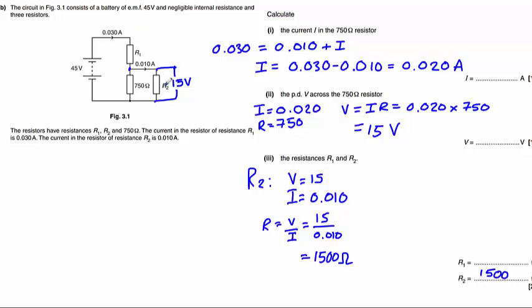This is a potential divider circuit here. If there are 15 volts across this part of the circuit out of a total of 45 volts, there must be 30 volts across this remaining part of the circuit. So for R1, V equals 30 volts. The current I we know to be 0.030, so R is going to be 30 divided by 0.030, which is 1000 ohms.